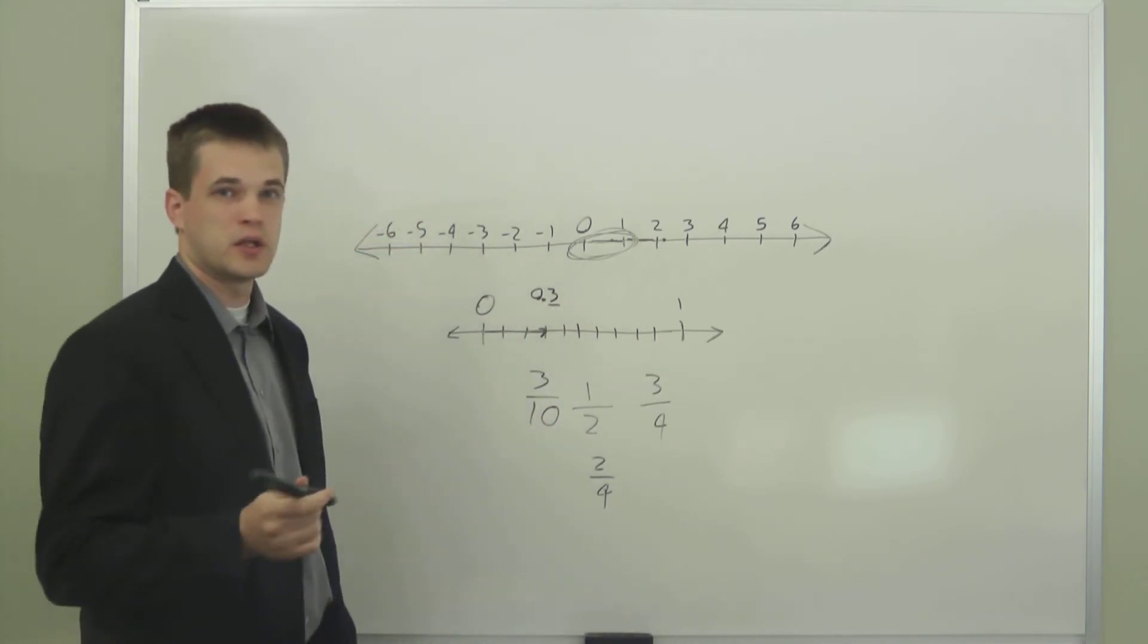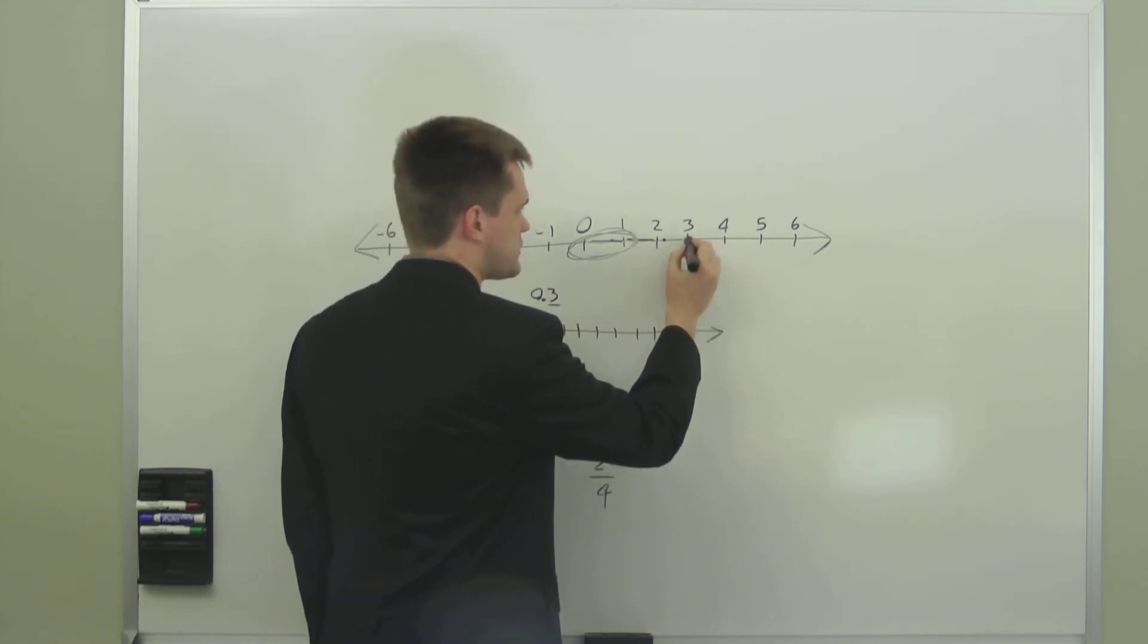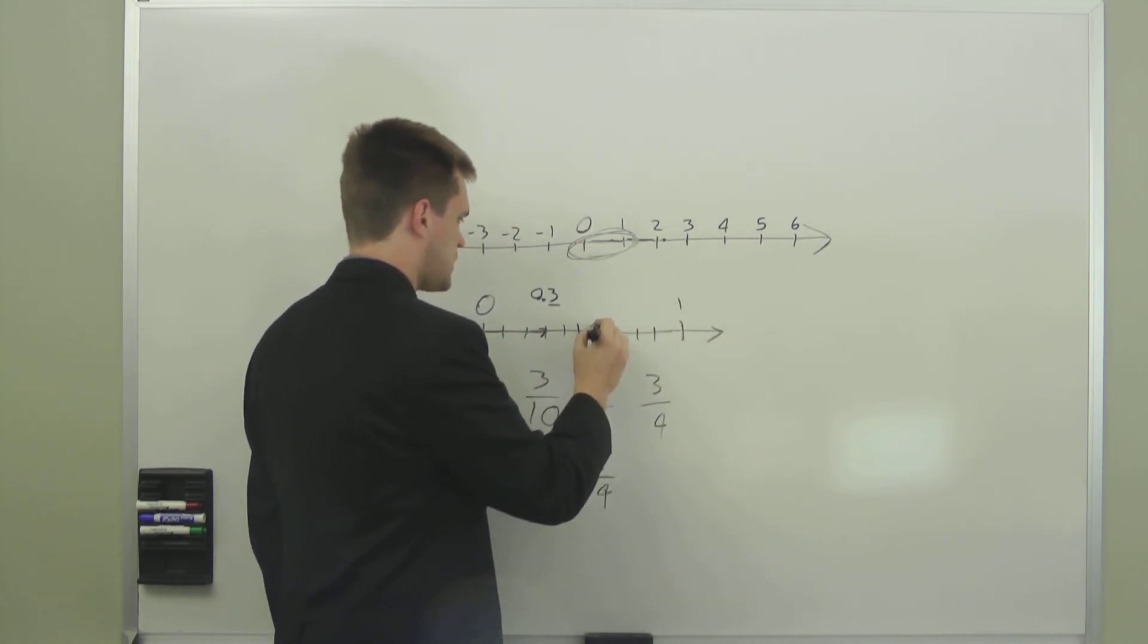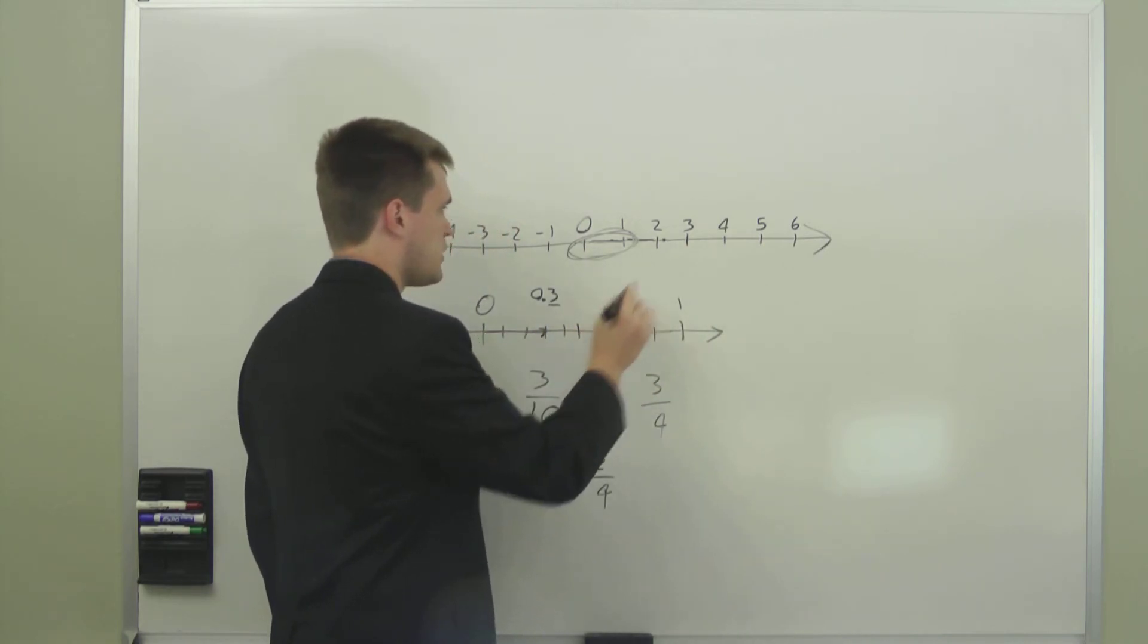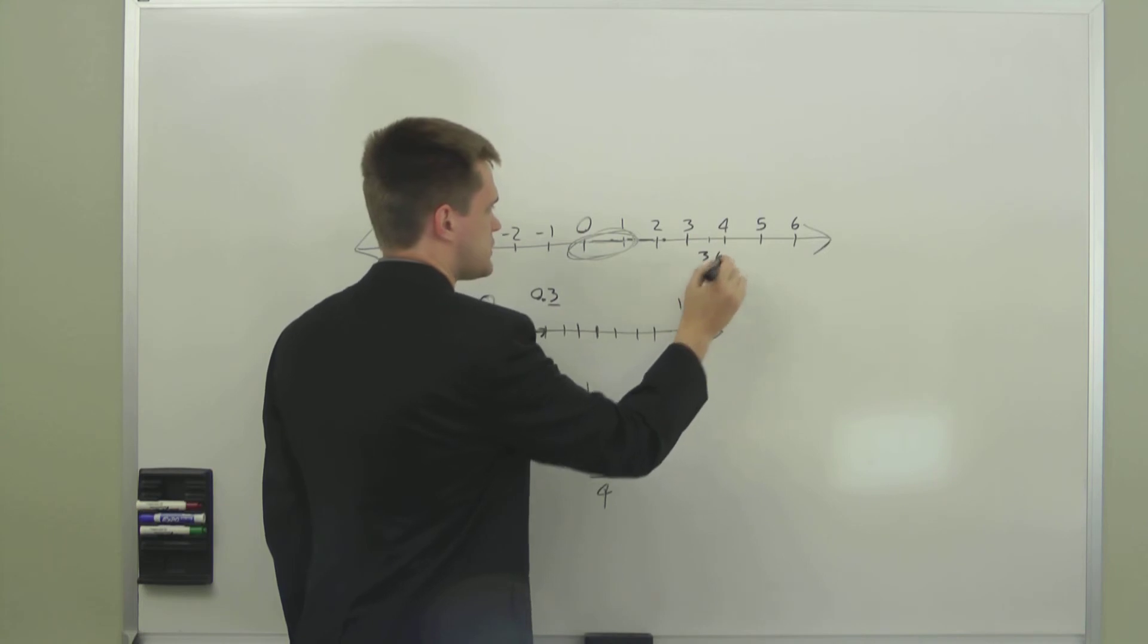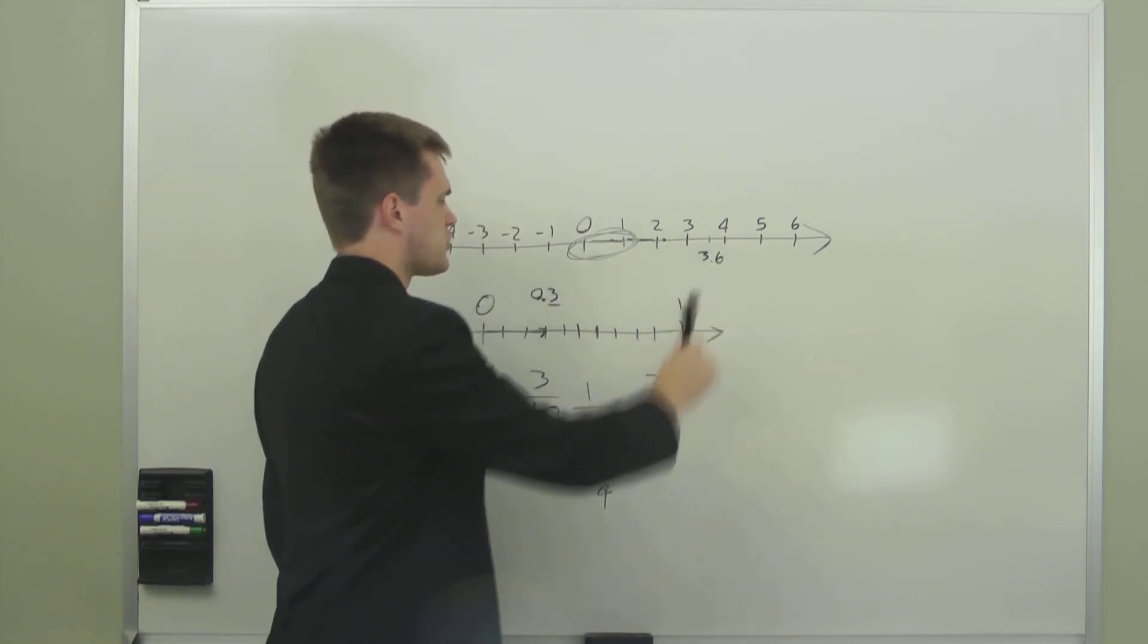And so you can take the space between any of these integers. For instance, if you wanted to take the space between three and four and count six-tenths of the way from three to four, you would write this as 3.6, because you've gone six-tenths of the way from three to four.